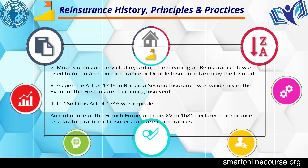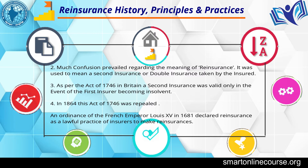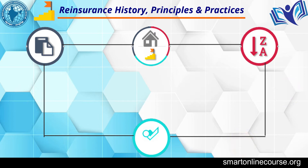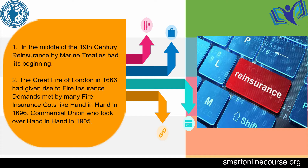As per the Act of 1746 in Britain, a second insurance was valid only when the first insurer became insolvent. But in 1864, even this Act of 1746 was repealed, and an ordinance was passed by Louis XIV of France in 1681 declaring reinsurance a lawful practice of insurers. In the middle of the 19th century, reinsurance by marine treaties had its beginning.